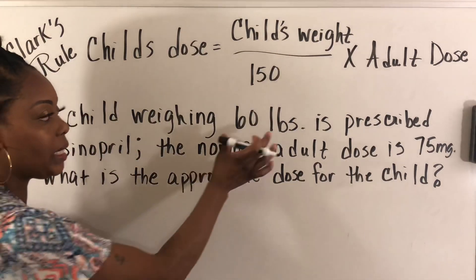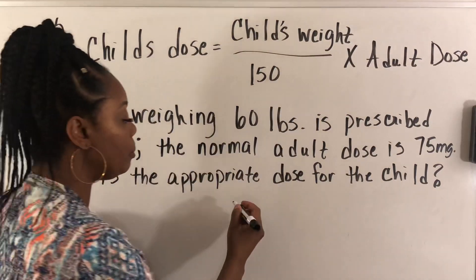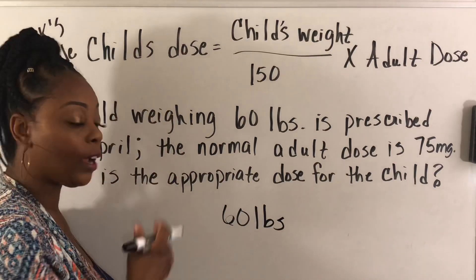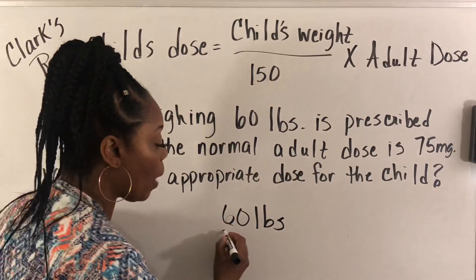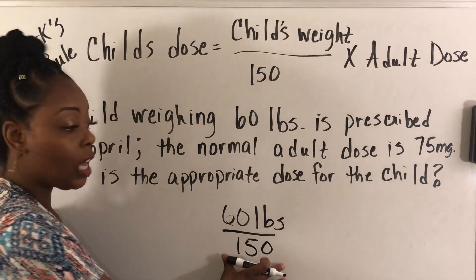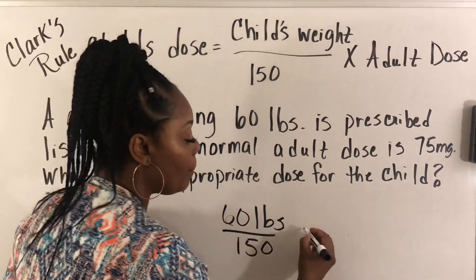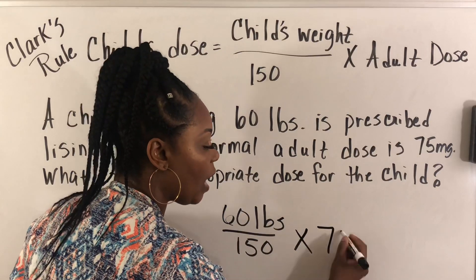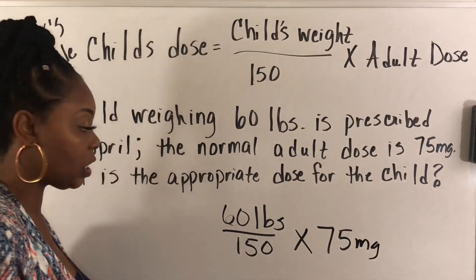The child's weight is 60 pounds. According to the formula, we divide that by 150, then multiply by the adult dose, which is 75 milligrams. You can write the units if you like — it's entirely up to you.